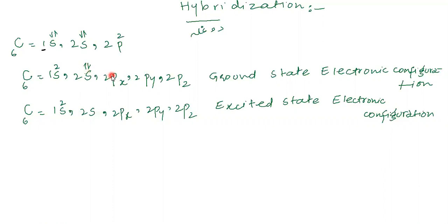Now we have 2 electrons left. One possibility is to keep those 2 electrons in any orbital with opposite spin. But if there are more orbitals available with the same energy, we cannot pair them up. These orbitals of the same energy are called degenerate orbitals.